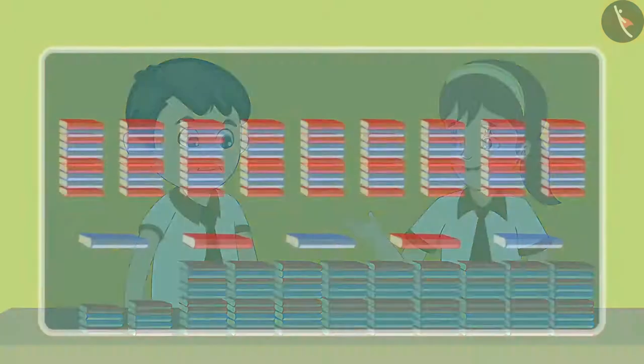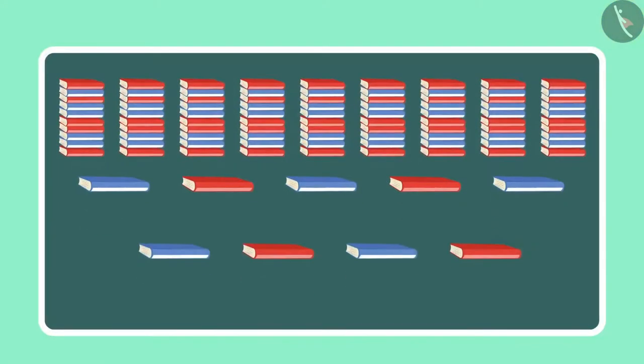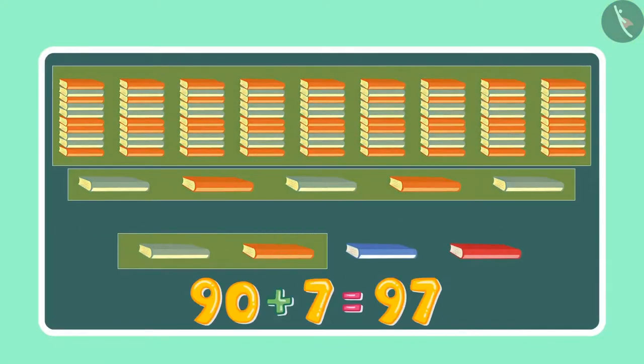Chotu, initially there were 95 books and then 96, 97, 98, 99.